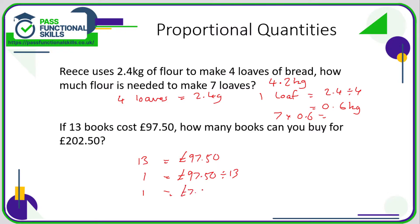Now we want to know how many books we can buy for £202.50, so we need to find how many 7.50s there are in £202.50. That calculation is £202.50 divided by £7.50, and the answer is 27. So we can buy 27 books.